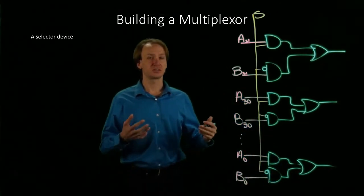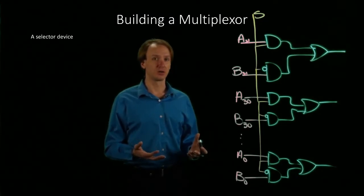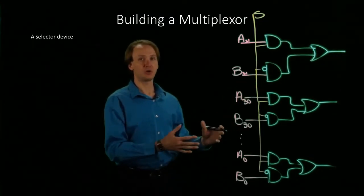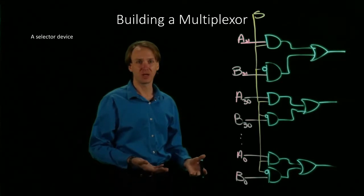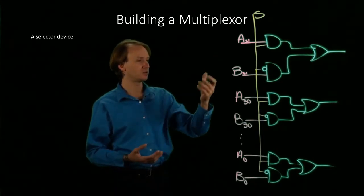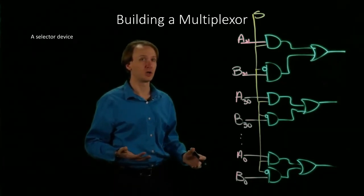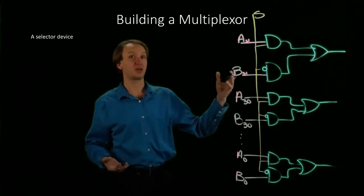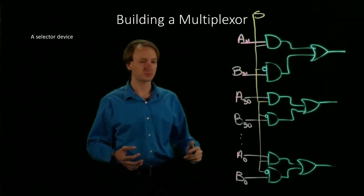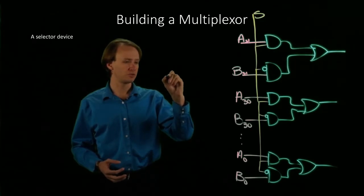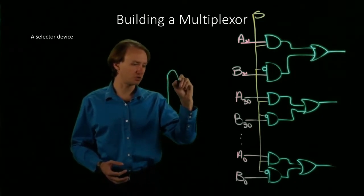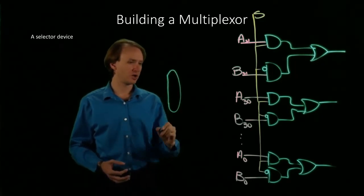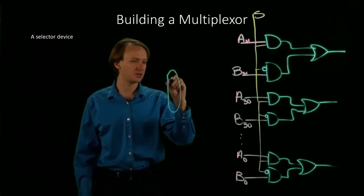Now, this is our first building block. We don't want to have to go back and build a multiplexer every time we need one, every time we want to choose between one of two, three, or four values. We really just want to know that this is how we can build a multiplexer. So in the future, we'll build lots of multiplexers by drawing a structure that looks like this.